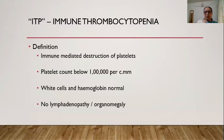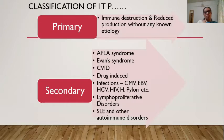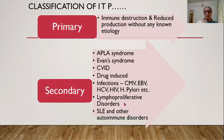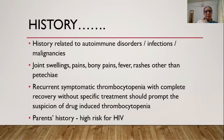By definition, ITP is immune-mediated destruction with platelet count below 100,000/mm³, with normal white cells and hemoglobin, no lymphadenopathy or organomegaly in an otherwise healthy child. Primary ITP has no known etiology; secondary ITP has a known etiology — APLA syndrome, Evans syndrome, CVID, drug-induced, infections (CMV, HCV, HIV), lymphoproliferative disorders, SLE, and other autoimmune disorders.